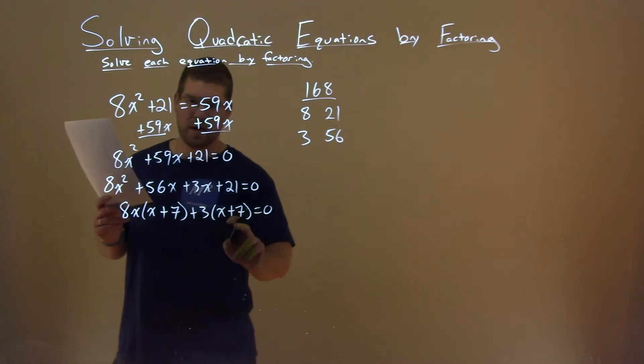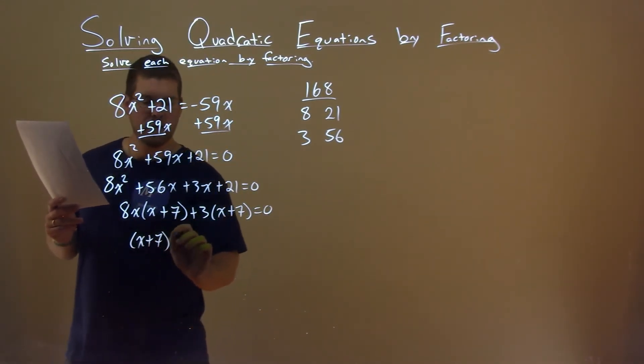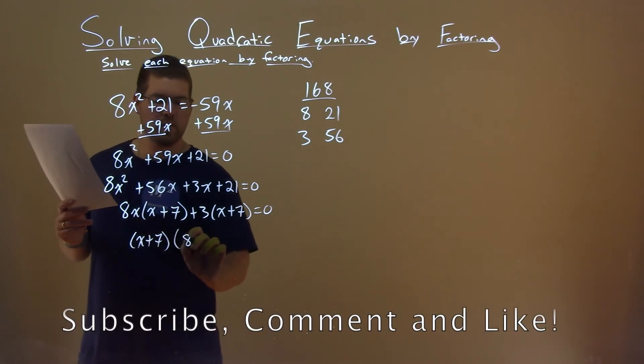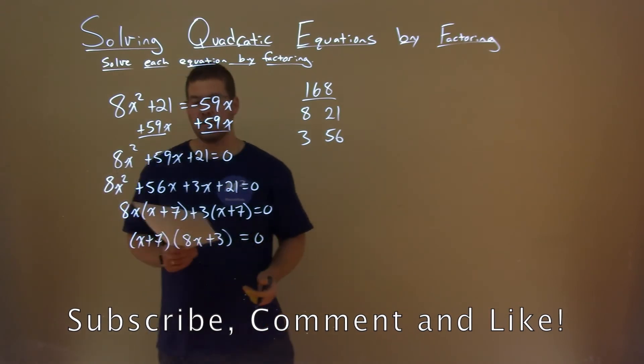We see x plus 7 and an x plus 7. Pull that out, we have x plus 7 here, and we're left with that 8x being multiplied plus 3 right there. So now we've actually factored our equation.